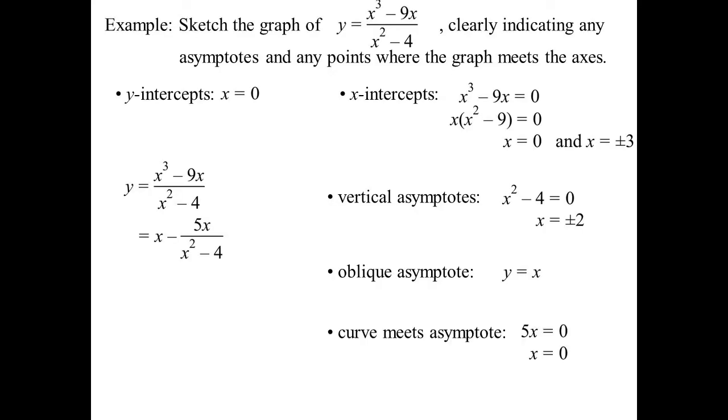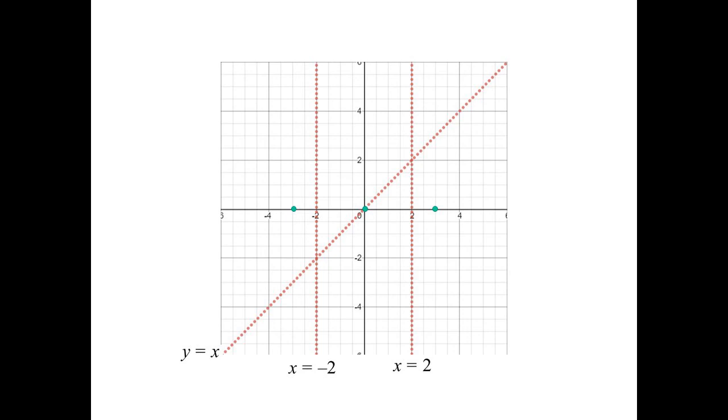Now the curve does meet the asymptote because it is possible for that remainder, 5x, to equal zero. So x equals zero will meet the asymptote. I suppose when you draw it in, we can see that that has to happen anyway because that asymptote goes through the origin. We'd already determined that this curve goes through the origin.